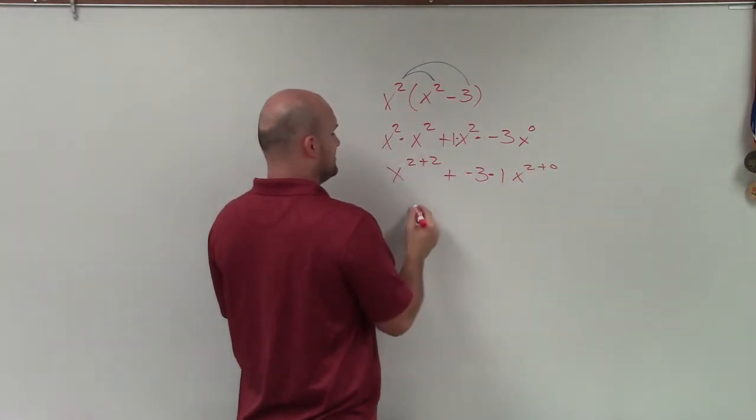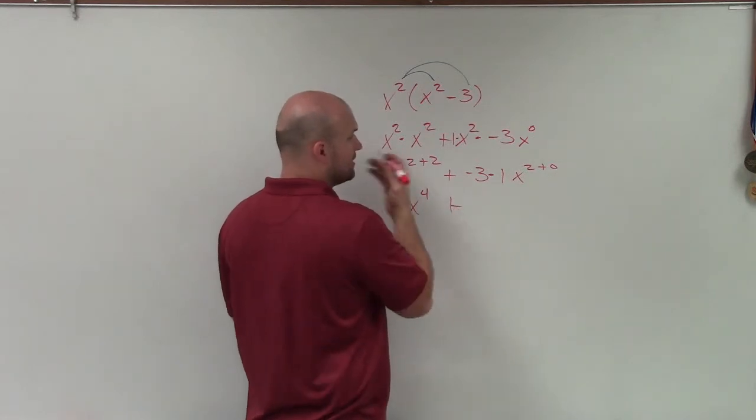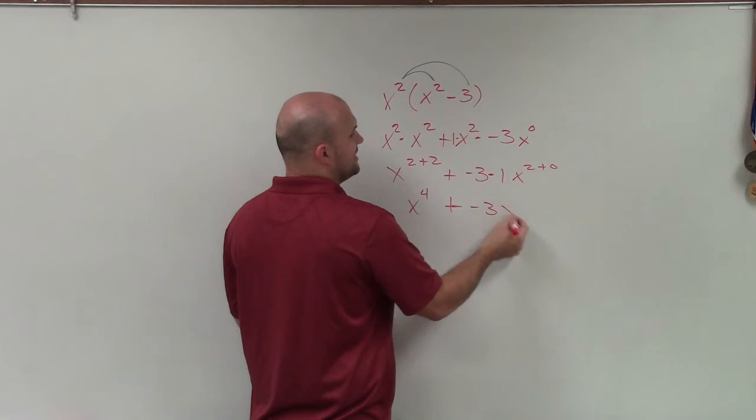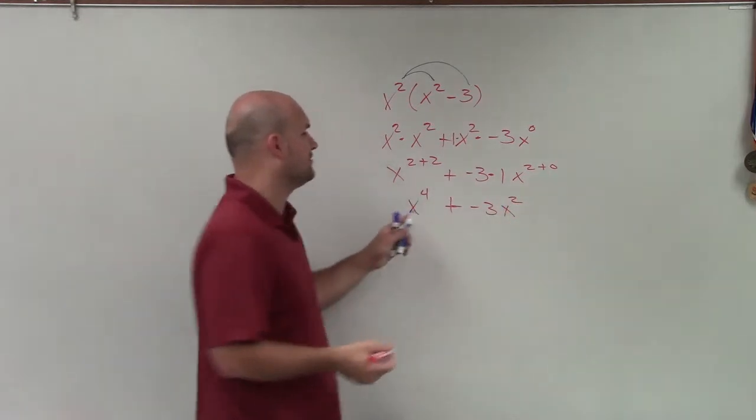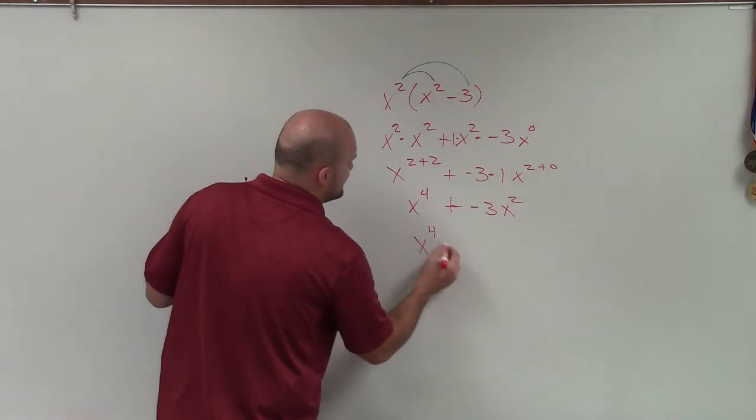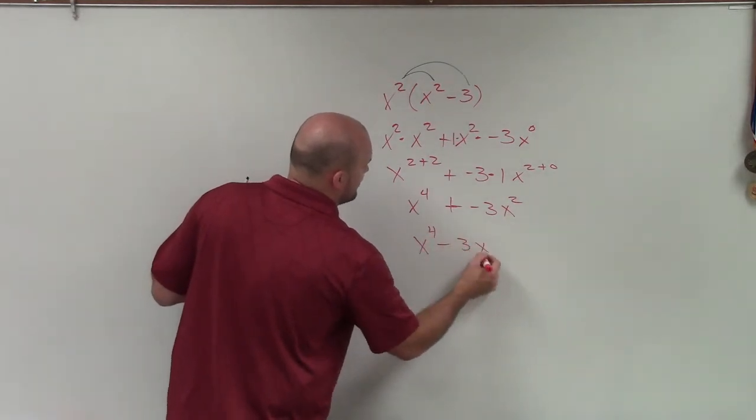x to 2 plus 2 is x to the 4th, plus - and actually not plus anymore - it's plus a negative 3x squared. Rather than writing x to the 4th plus a negative, we usually just write x to the 4th minus 3x squared.